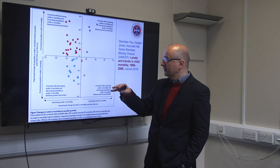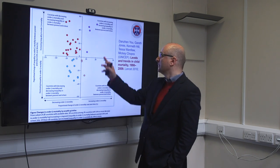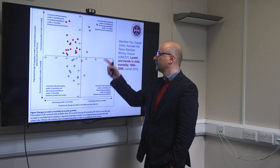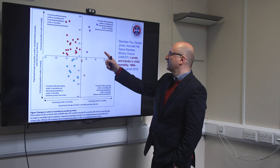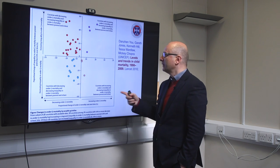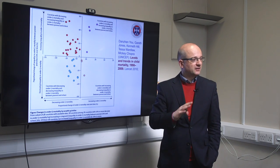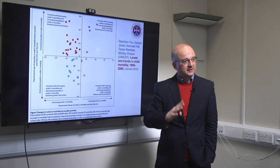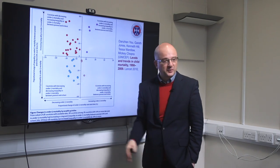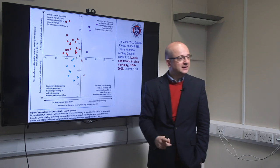Most countries were decreasing under-5 mortality but increasing inequality in under-5 mortality between the poorest and richest within the country. Very few countries had reduction of child mortality and reduction of equity gap at the same time. Some countries were actually increasing under-5 mortality with increasing inequality — the absolute worst case. But the key problem is this: child mortality is going down, but inequity is going up, and nobody sees this as a problem.